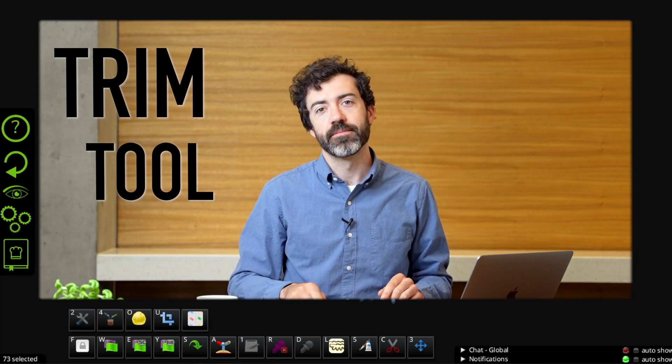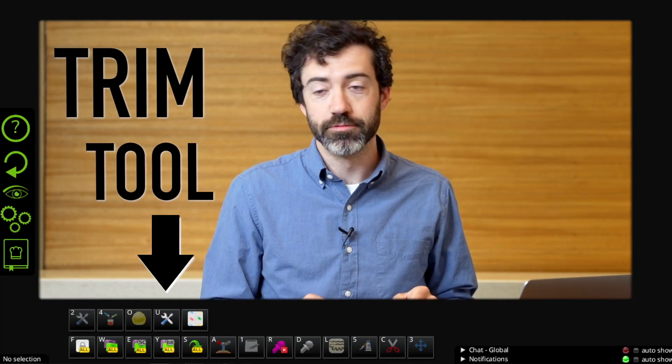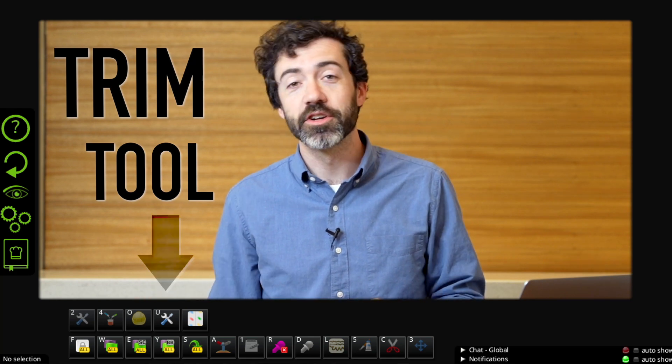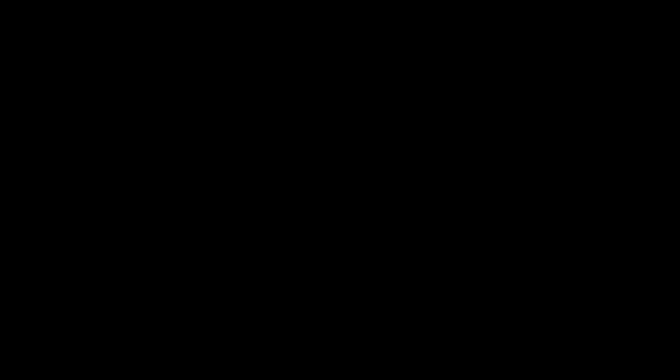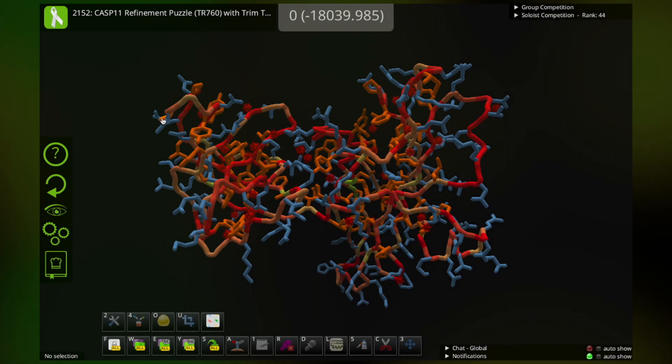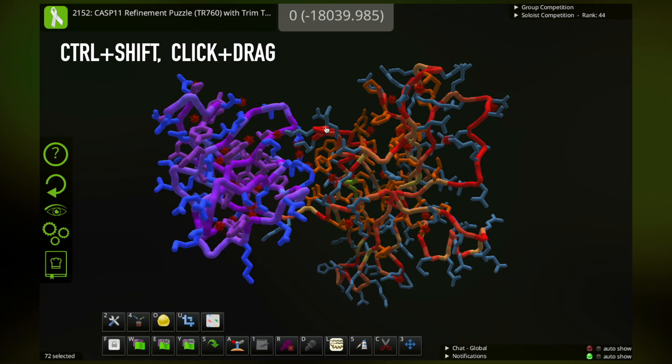This month we launched the new Trim Tool in Foldit. This tool allows you to focus in on one region of a protein while ignoring the rest. It's going to be especially useful for large proteins. The Trim Tool is really simple to use. You just select the residues you want to focus on. I like to use Control-Shift and click and drag to select a sphere of residues and then you click the Trim Tool icon.